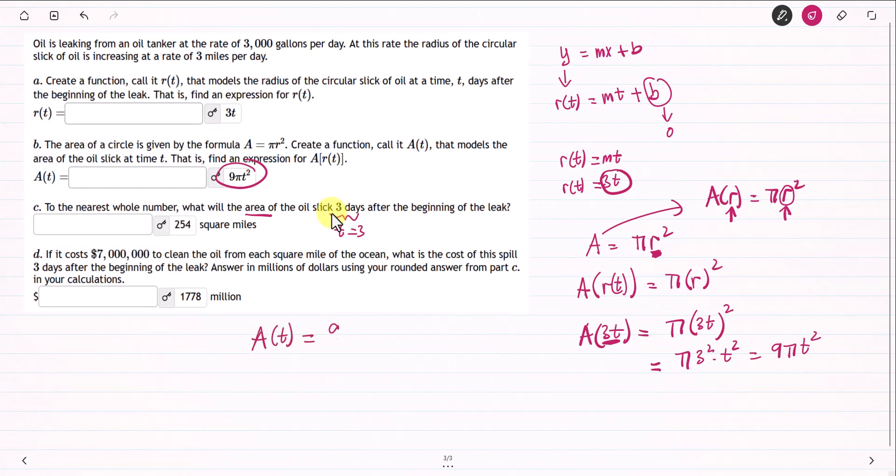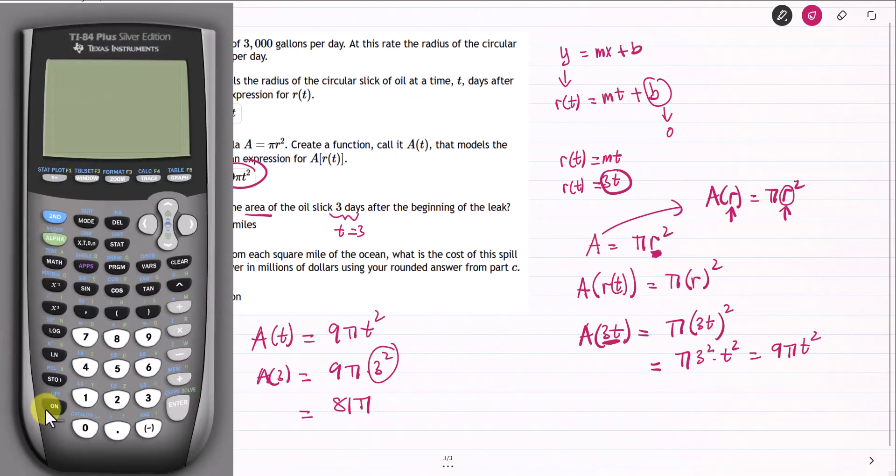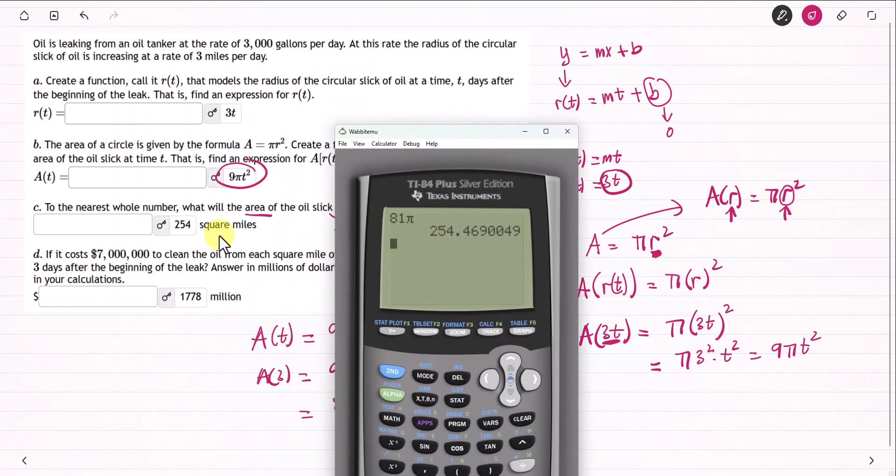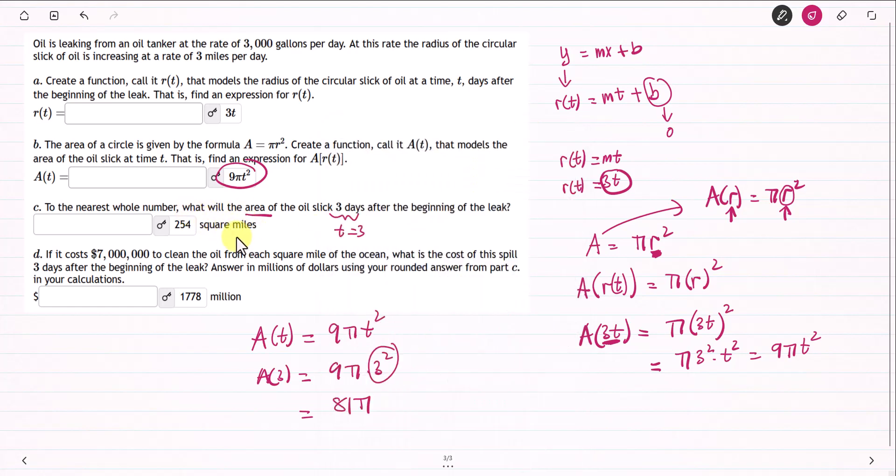What is the area? What is the value of A when t equals 3? We know from the formula we got from part B, A of t equals 9 pi t squared. Now t is 3, so I plug in 3. I get 3 squared. 9 times 9 is 81, 81 pi. Using the calculator, 81 multiplied by pi gives me 254 square miles.